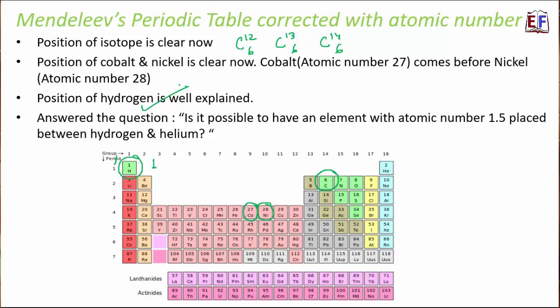This was perfectly sorted. Hydrogen has atomic number one, helium two, lithium three. Could elements exist between them with atomic numbers like 1.2, 1.5, or 1.7? No — because atomic number tells us the number of electrons, and atomic number is always a natural number. You cannot have a decimal atomic number, so no element can have an atomic number between 1 and 2, ruling out any future discovery of such elements.